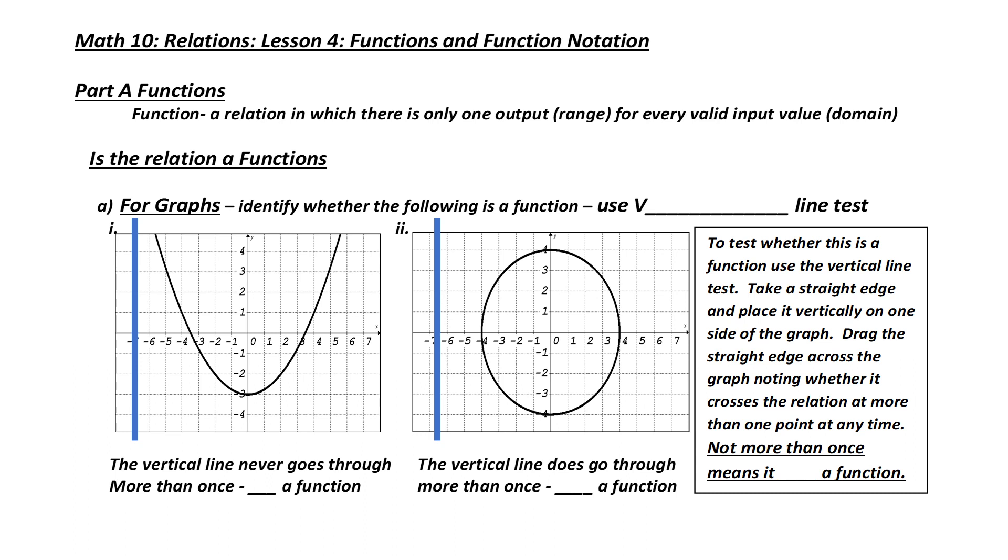For graphs, it's somewhat simple. We use something called the vertical line test. To use the vertical line test, we take a straight edge, place it vertically on one side of our graph, and drag the straight edge across, noting whether it crosses our relation at more than one point. If it does not cross at more than one point, it means it is a function.